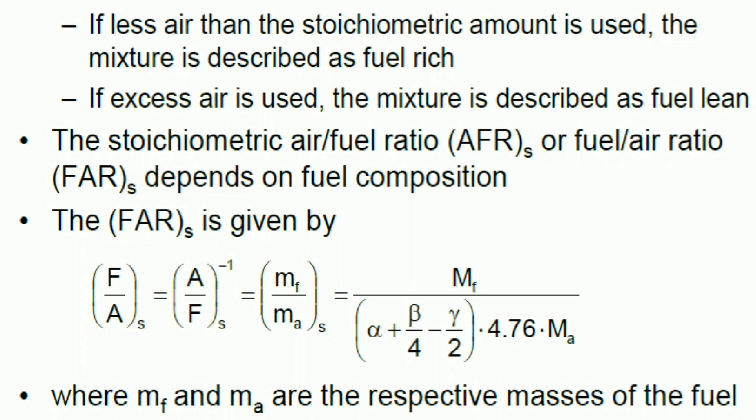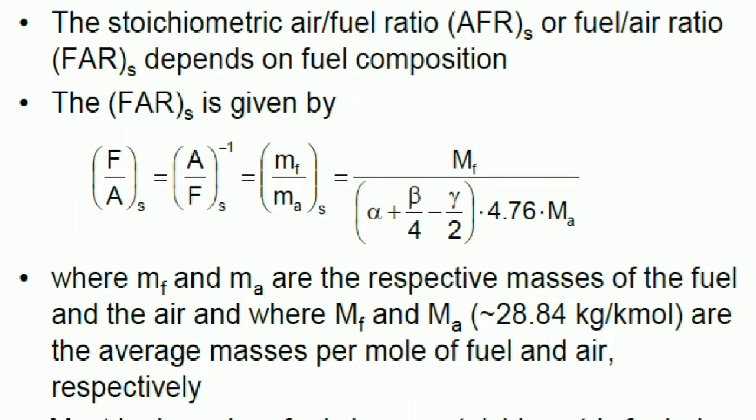The stoichiometric air-fuel ratio (AFR)ₛ or fuel-air ratio (FAR)ₛ depends on fuel composition. The FAR is given by (F/A)ₛ = (A/F)ₛ⁻¹, that is, mf/ma = mf / [(α + β/4 - γ/2) × 4.76 × ma]. Where mf and ma are the respective masses of the fuel and the air. mf and 28.84 kg per kilomole are the average masses per mole of fuel and air respectively.